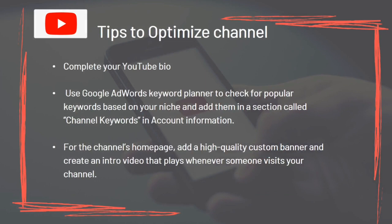Complete your YouTube bio. Use Google AdWords Keyword Planner to check for popular keywords based on your niche and add them in Channel Keywords and Account Information. For the channel's homepage, add a high-quality custom banner and create an intro video that plays whenever someone visits your channel.